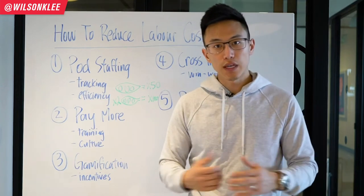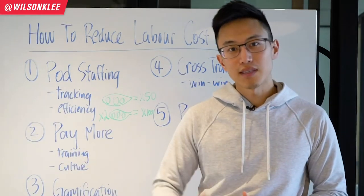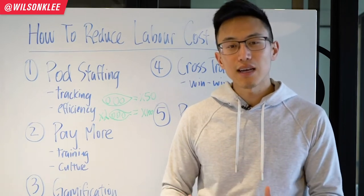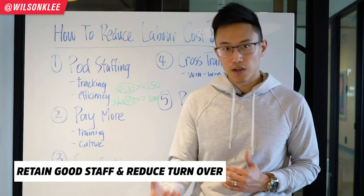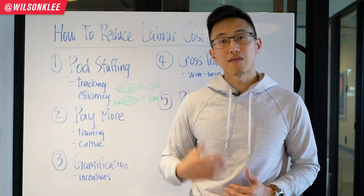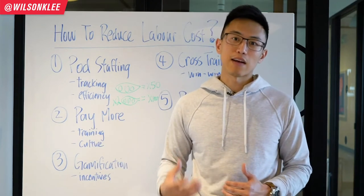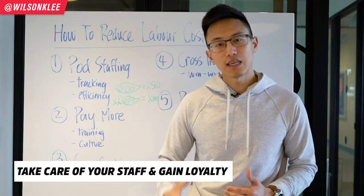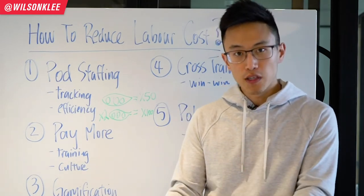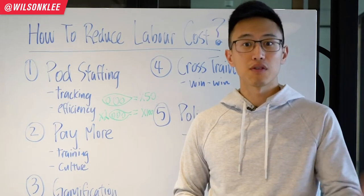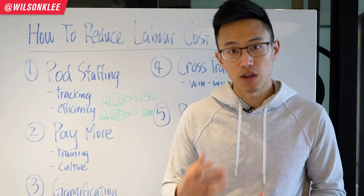The second way to reduce your labor costs is to pay more. Before you close this video, hear me out — paying more doesn't actually mean you're paying more. If you pay that extra 50 cents to retain good staff, the turnover you save allows you to save hundreds, if not thousands of dollars in training costs. If you take care of the staff that works for you and gain their loyalty, they will invest more in their job, deliver better service, reduce spoilage, and prevent theft within your restaurant.